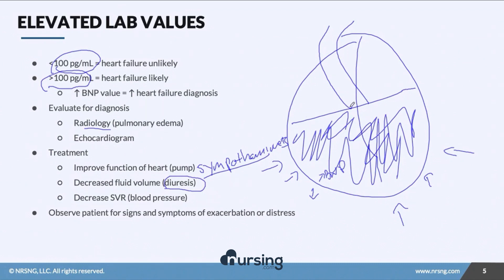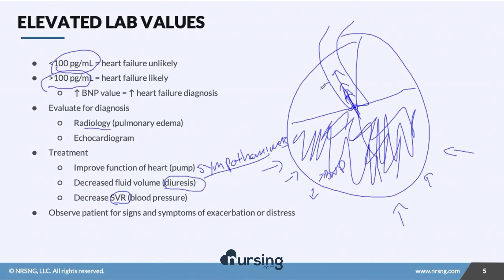We also want to decrease systemic vascular resistance — the pressure the ventricles have to overcome to open the aortic valve and expel fluid. That value is essentially our blood pressure. The medications we'd give for that would be vasodilators — opening the vessel makes it less difficult to squeeze — and we can also give ACE inhibitors.